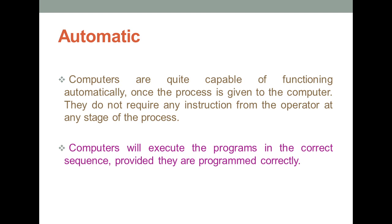For example, if you want to compress a video and you have software for it, you open the software, give it the input video by setting the path, then click the compress button. Automatically, the software will compress that video and save the compressed file in the desired folder. This is one example of an automatic process.